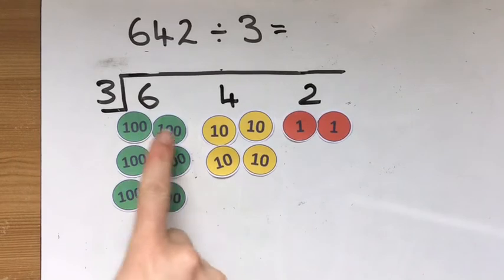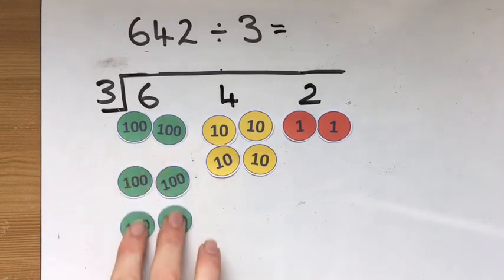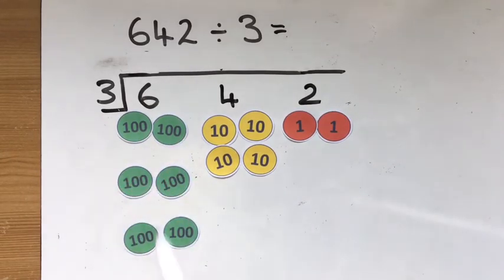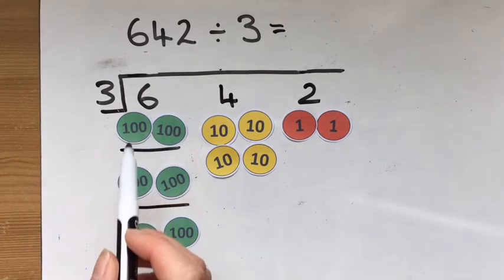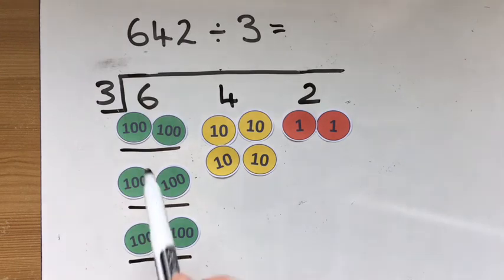So with the six, that's quite easy. We can see each group. There's one, there's the next, and there's the next. There's three groups there, and each group has 200 in it.